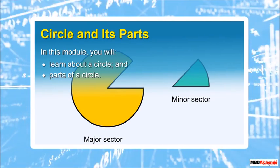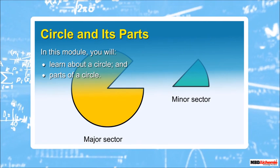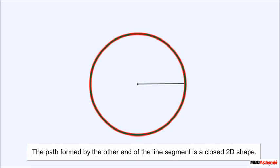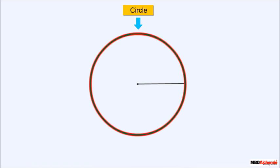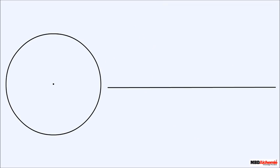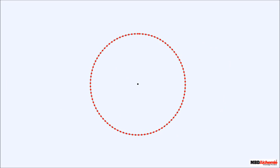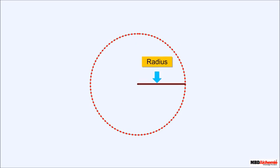In this module, you will learn about a circle and its parts. We are all familiar with circles. Suppose we take a line segment, fix it from one end, and rotate it — the path formed by the other end is a closed 2D shape called a circle. A circle is a collection of points which are at a fixed distance from a fixed point. This fixed point is called the center of the circle, while this fixed distance is called the radius.